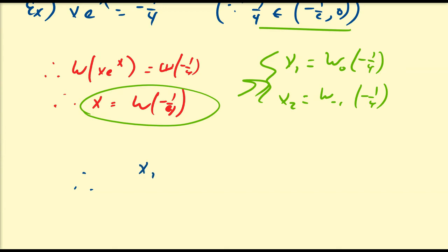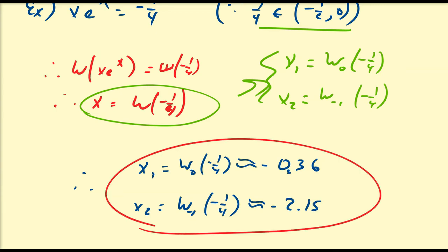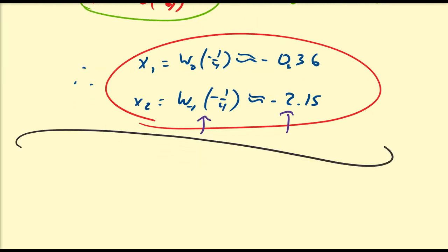We can approximate these numerically: x₁ = W₀(−1/4) ≈ −0.36 and x₂ = W₋₁(−1/4) ≈ −2.15. Those are the exact analytical solutions and their decimal approximations, which you can compute via Newton's method. This covers all possible cases for x·e^x = a, which we can extend further in the next video.